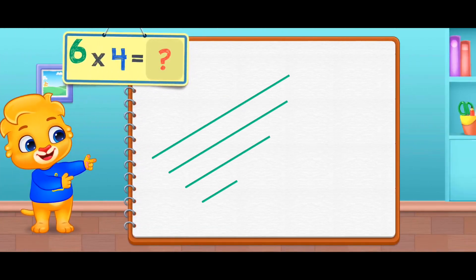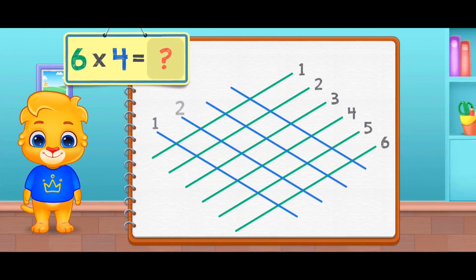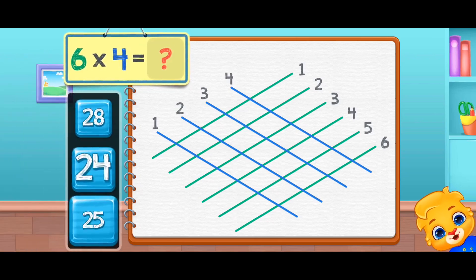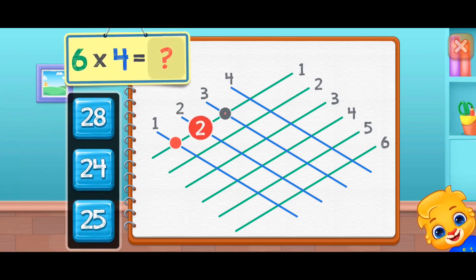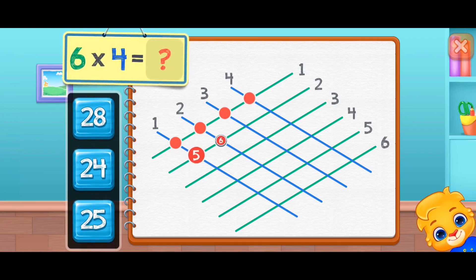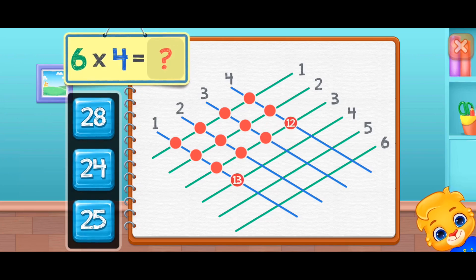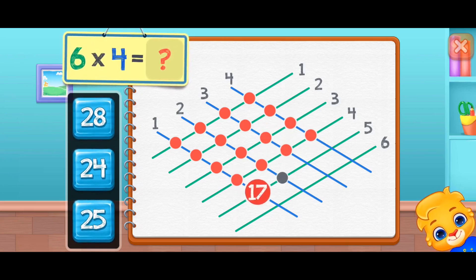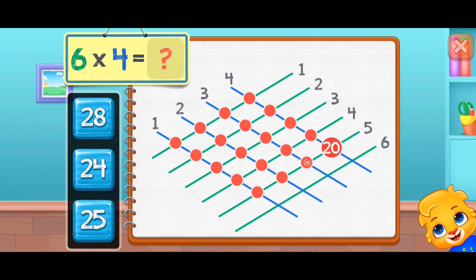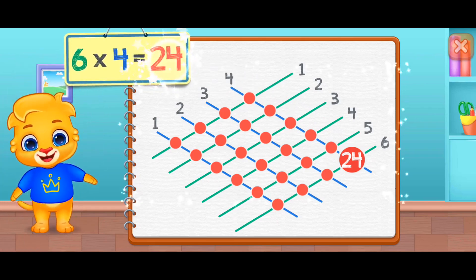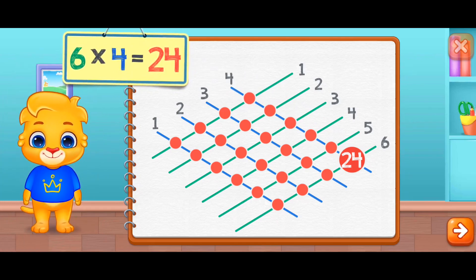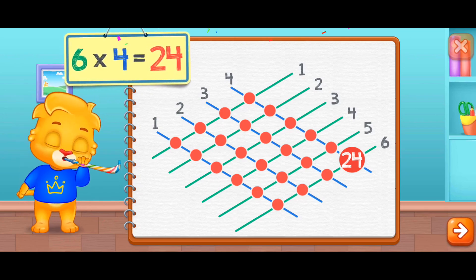Six times four equals — six times four equals twenty-four.